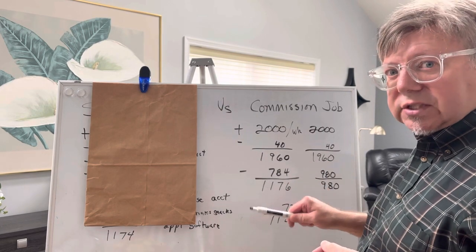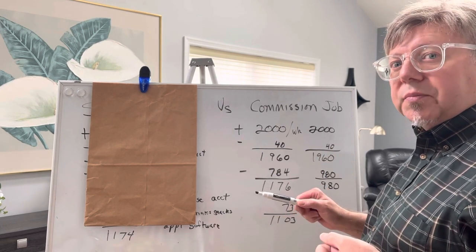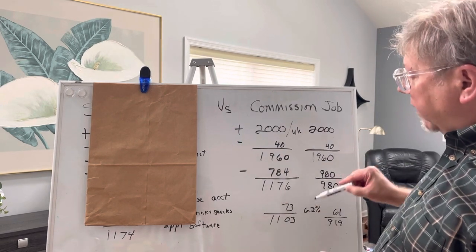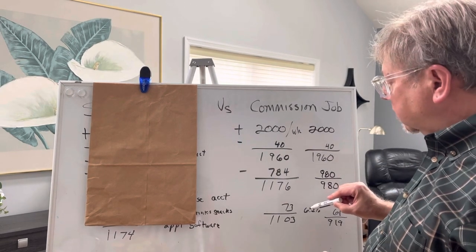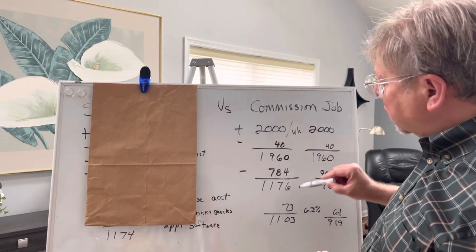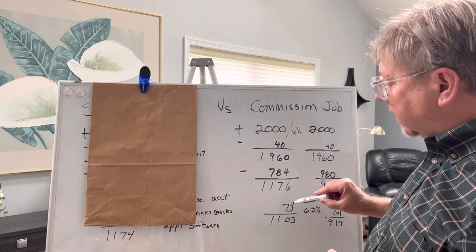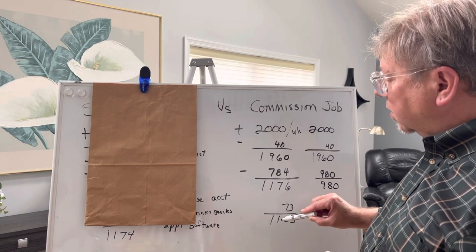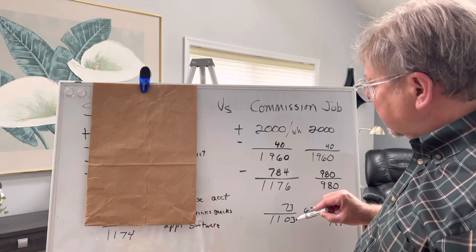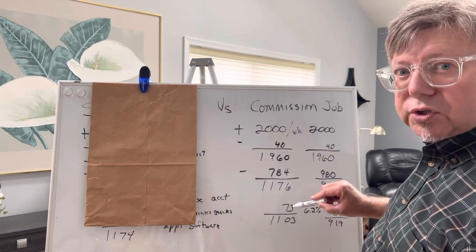Now there's a lot of deductions that you all know about, but the one that's the biggest is the one for social security, and that's 6.2%. Your employer pays another 6.2% on this same amount of money. So that's $73 in this case, leaving you with $1,103 after deducting for social security tax.